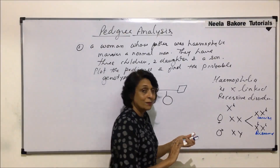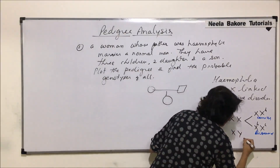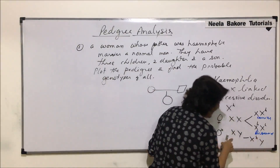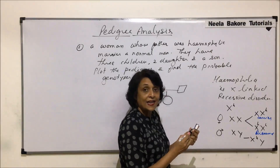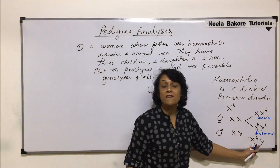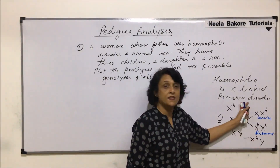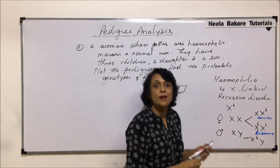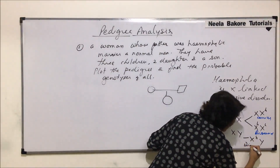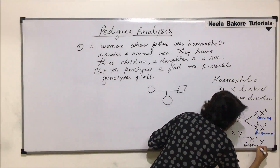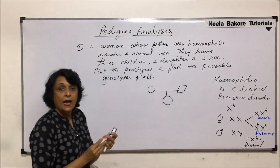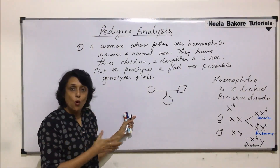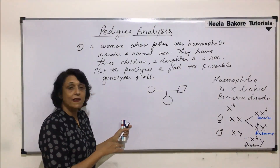For males, the genotype is X^h Y for a diseased individual, or normal X Y. Since the Y chromosome carries no dominant gene to counteract the recessive allele, even a single recessive gene expresses itself. That is why in sex-linked disorders, males are more affected and females are either carriers.